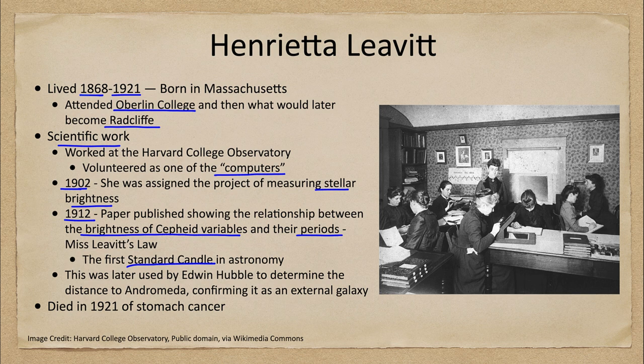A standard candle was something astronomers had been looking for as a way to measure distances. The one method used at this point was parallax — the shift of a nearby star relative to more distant stars as the Earth moves around the Sun. However, parallax only works for the very closest stars; it's not good for measuring great distances.